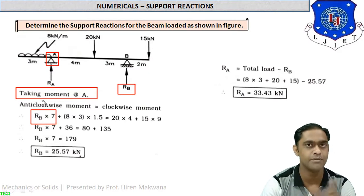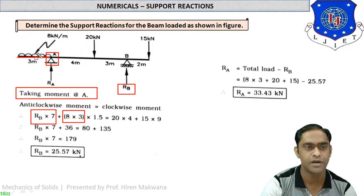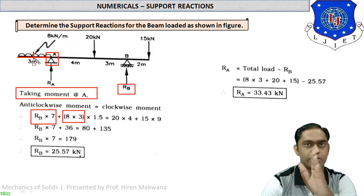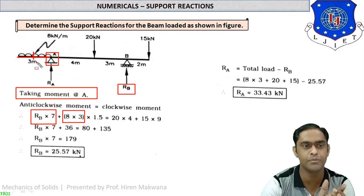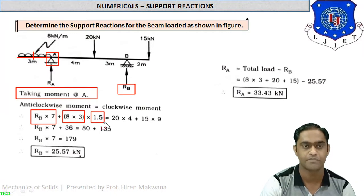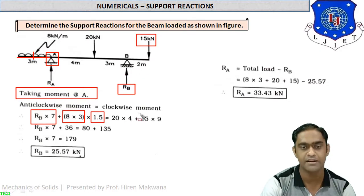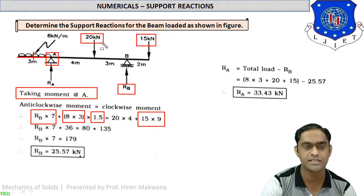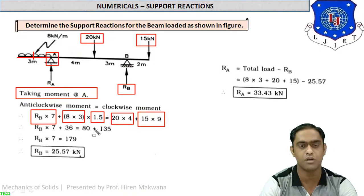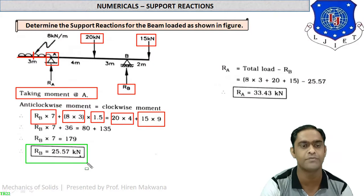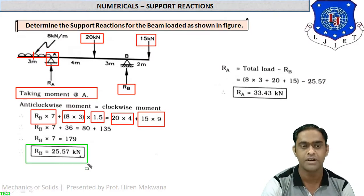Taking moments at A: RB acts upward, rotating anti-clockwise, at a distance of 7 m from A — moment = RB × 7. The UDL (8 × 3 = 24 kN) on the overhanging left side acts anti-clockwise about A, at its centroid 1.5 m from A — moment = 24 × 1.5. Clockwise moments: 15 kN load at distance 4+3+2 = 9 m gives 15 × 9; the 20 kN load at 4 m from A gives 20 × 4. Solving gives RB = 25.57 kN.